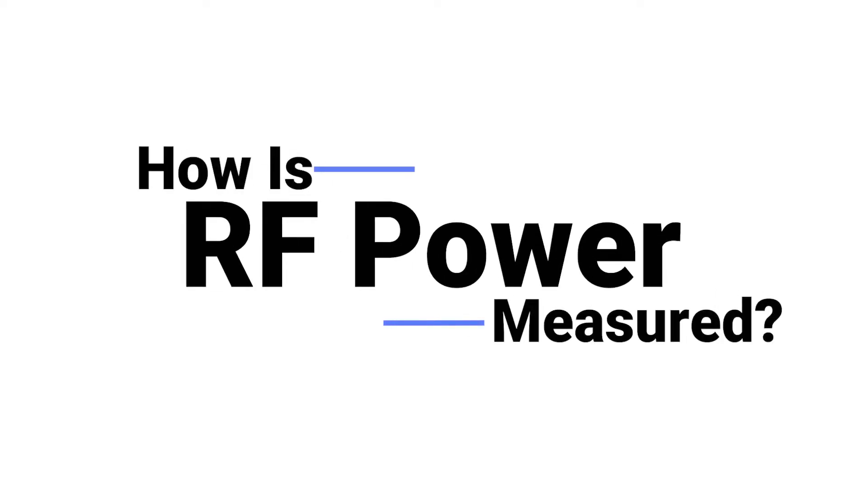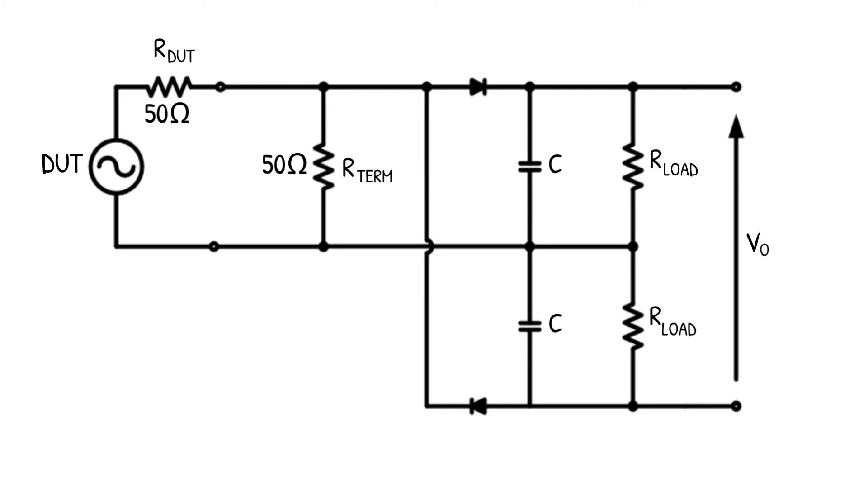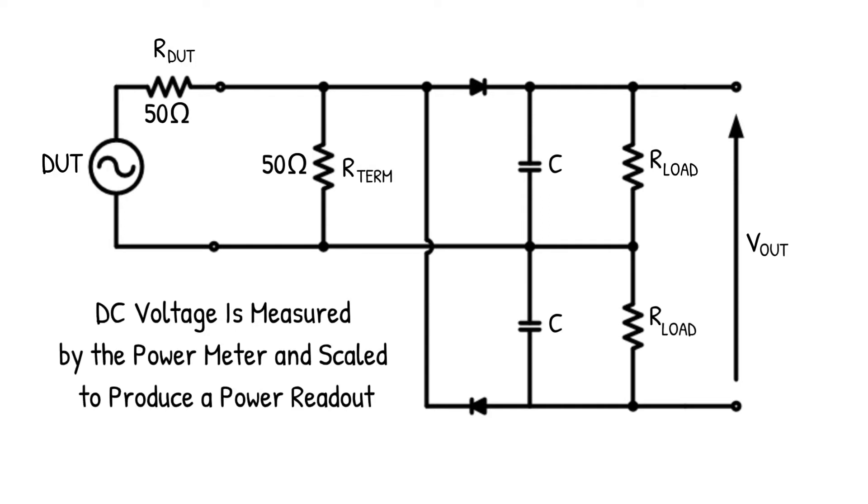How is RF power measured? To start, high frequency diodes detect the RF voltage developed across a terminating load resistor. The diodes directly perform an AC to DC conversion, and the DC voltage is measured by the power meter and scaled to produce a power readout.